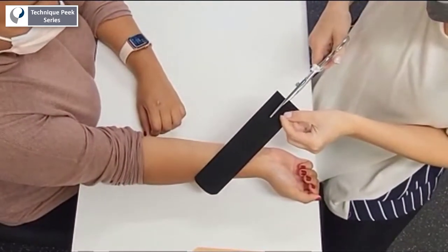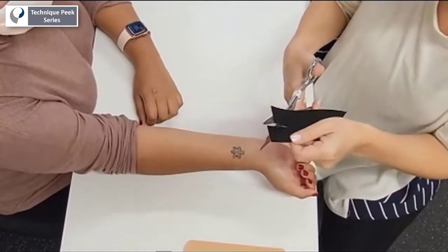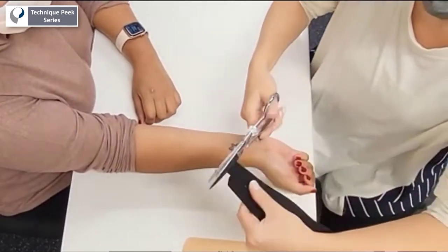Next, you'll want to cut a small slit to make a Y-shaped piece, rounding the edges for better adhesion.